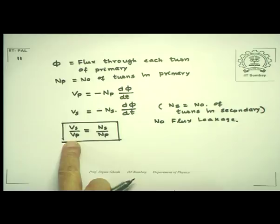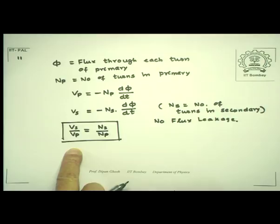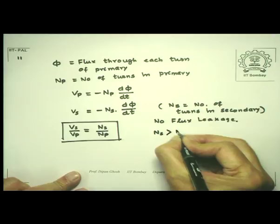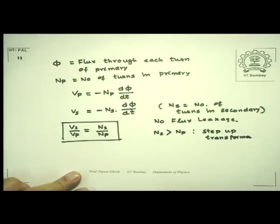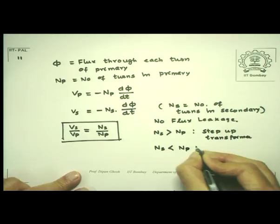This is the primary equation of a transformer because it tells us that if we want the secondary voltage to be stepped up — meaning the secondary voltage to be larger than the primary voltage — then NS should be greater than NP for a step-up transformer. The reverse is true: if you want a step-down transformer, then NS must be less than NP.